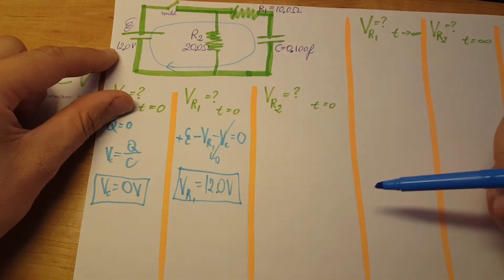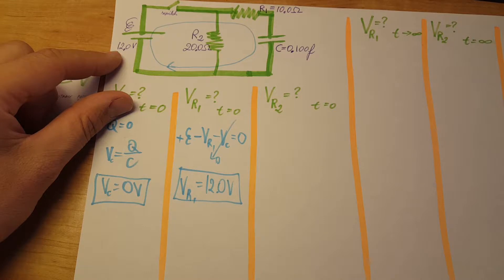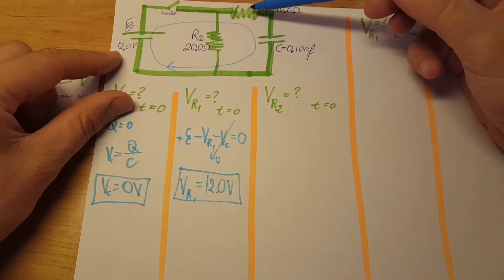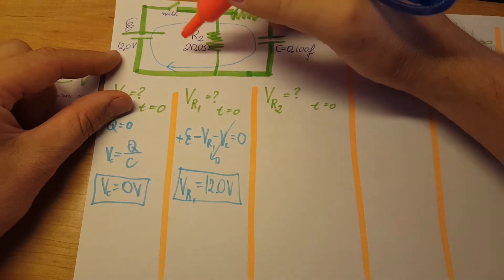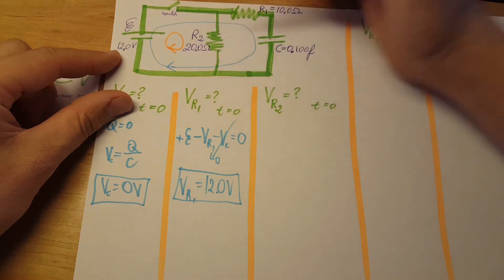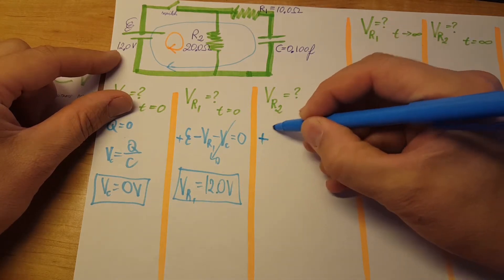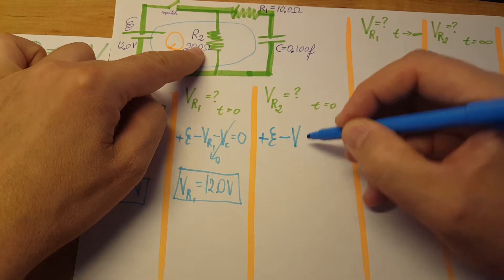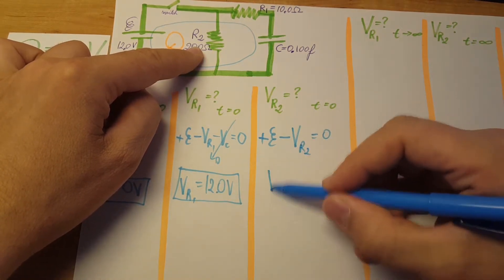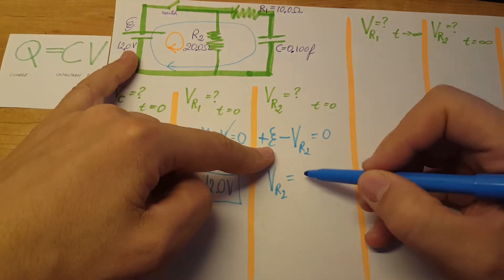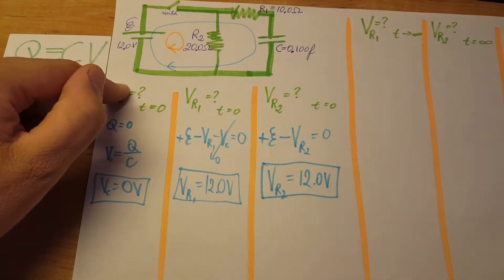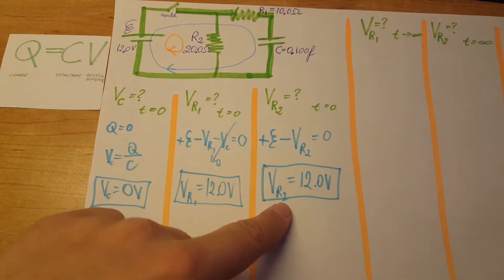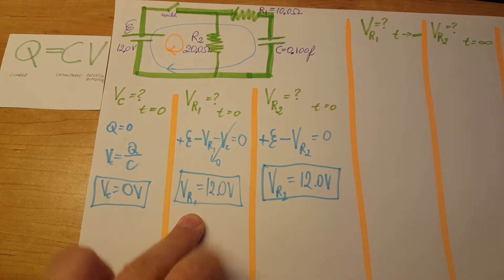Part C: voltage on resistor 2 at T=0. Since the capacitor has no charge, R1 and R2 are effectively in parallel and should have the same voltage. Using the left loop going clockwise: plus EMF minus the voltage drop on R2 equals zero. Therefore V_R2 equals EMF, which is 12 volts. Since the capacitor has zero charge there is no voltage drop over it, so the only voltage drops are on R1 and R2.